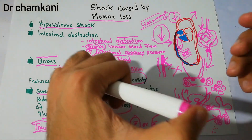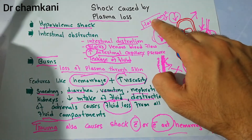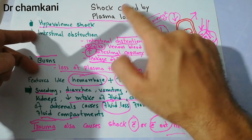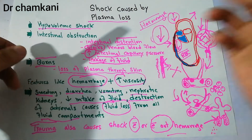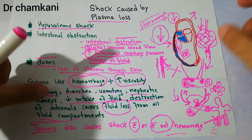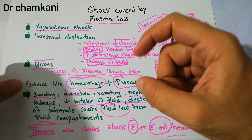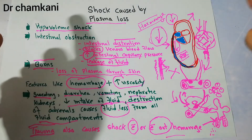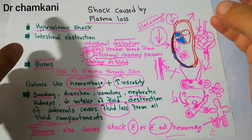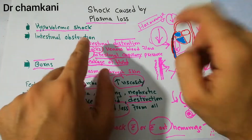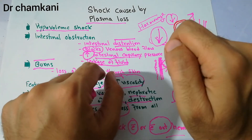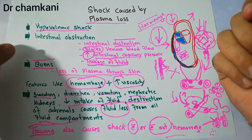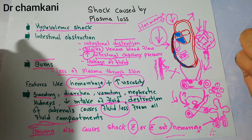To summarize, hypovolemic shock can be caused by: hemorrhage; plasma loss (most commonly from intestinal obstruction and burns); fluid loss from severe sweating, diarrhea, or vomiting; and trauma without hemorrhage, where fluid accumulates in the tissue and is unavailable for circulation. All these factors ultimately lead to hypovolemic shock.